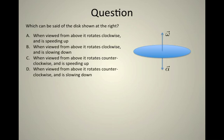Let's imagine a disk shown at right and it has two vectors drawn out for us: the omega vector which is pointing up and the angular acceleration vector which is pointing down.